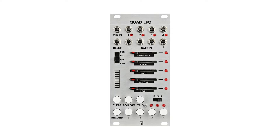Each channel of the Quad LFO can be set to either fast, slow, or clock-based tempo speeds. Additionally, each channel's sequencer can be set to either forward, reverse, pendulum, or random.